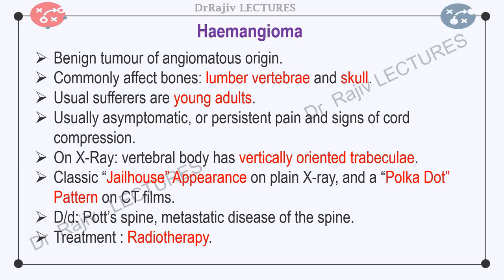Hemangiomas are benign tumors of angiomatous origin. They commonly affect the vertebrae and the skull. Most common sufferers are young adults. Usually asymptomatic but may present with persistent pain and signs of cord compression. They are usually discovered as incidental findings. One of the lumbar vertebrae is typically affected. Radiologically, the affected vertebral body has thickened and vertically oriented trabeculae. This gives a classic jailhouse appearance on plain x-ray and a polka dot pattern on CT films. This tumor should be differentiated from commoner diseases like Pott's spine and metastatic bone disease of the spine. Treatment for symptomatic disease is radiotherapy.